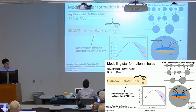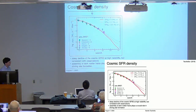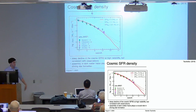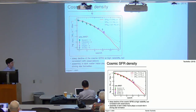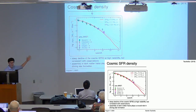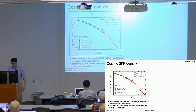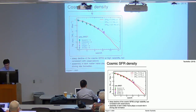These models are actually surprisingly successful in describing, for example, the UV luminosity function, but also the cosmic star formation rate density. This is pre-JWST data, and you can see an overall increase of about five orders of magnitude from redshift 14 up to redshift 4. The main reason for this very strong increase in these models is the assembly of the dark matter halos with cosmic time.